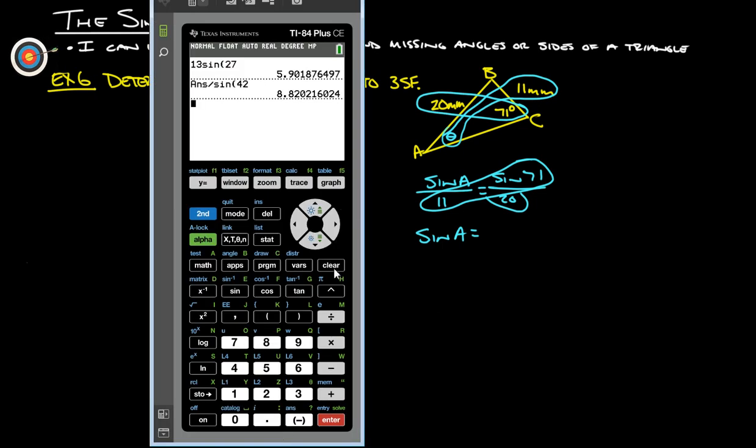All right. So, 11 sine 71 gives us 10.4, divide that by 20, and then sine A is 0.52.